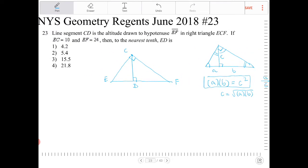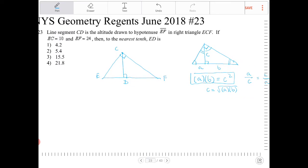Anyway, getting back to the problem here, what we have is EC is 10, so EC is 10. EF is 24, so this entire segment is 24.